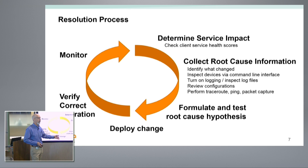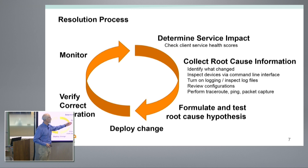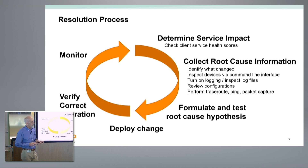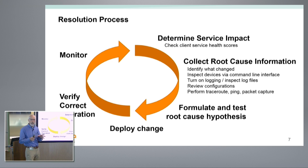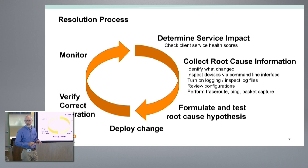We collect root cause information, make sense of what's happening, collect additional information to understand the root cause of the problem, figure out how to change it to resolve the issue, verify correct operation, and move back to the monitoring phase. When collecting information, you SSH into a box and execute CLI show commands, turn on logging, inspect log files, review configuration files, and do more active probing with traceroute, pings, or packet captures.